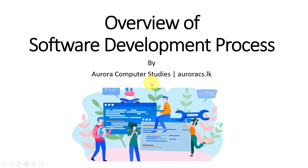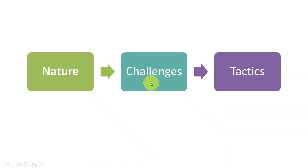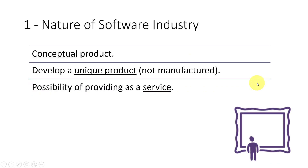In this session, we are going to understand the overview of the software development process. We are going to look at it in three steps. First, we will be looking at the nature of software and the software industry. Then we will look at some challenges we are facing. And finally, we will look at the approaches in overcoming those challenges. So let's look at the nature of software and the software industry, examining some key features.